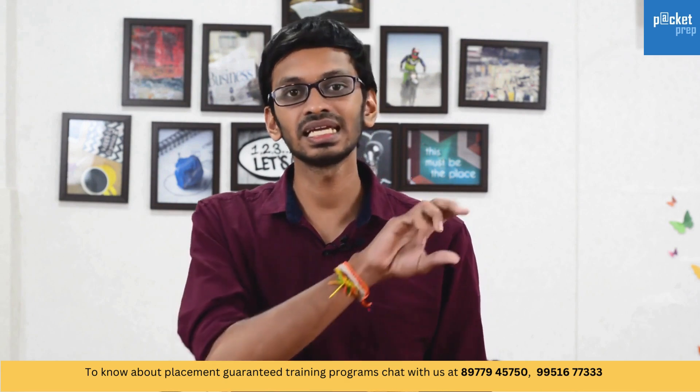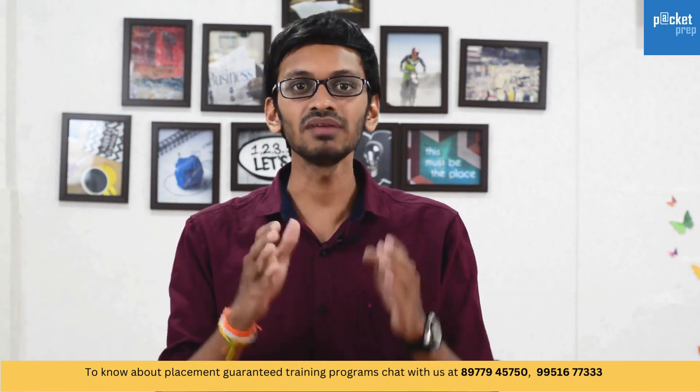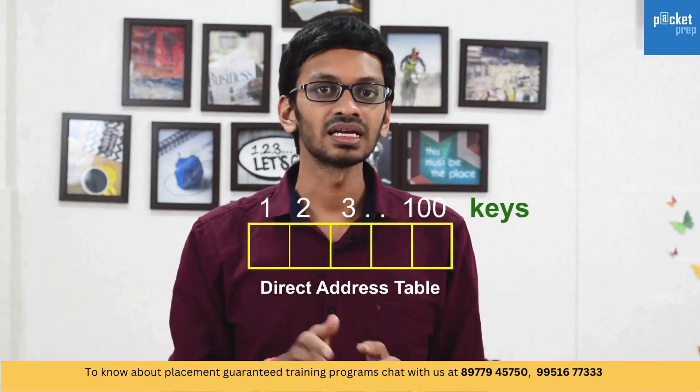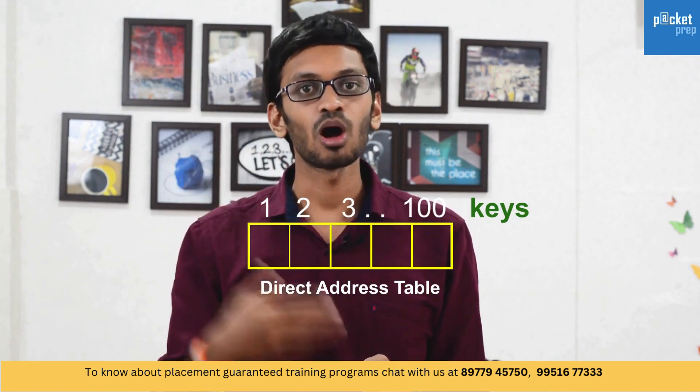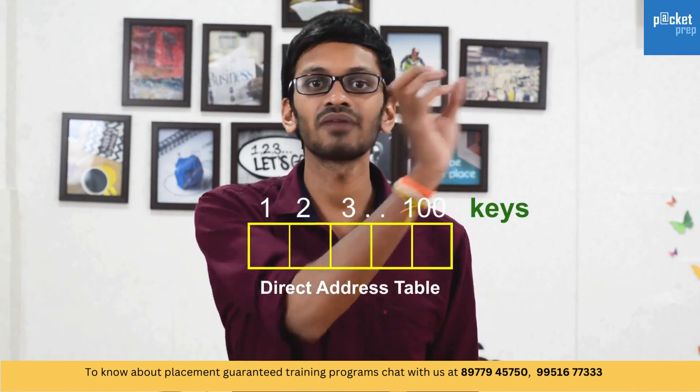They made this possible with the help of designing direct address table initially. Suppose if you are dealing only with the values 1 to 100, they have declared an array 1 to 100 and whenever a number is encountered, they have stored that particular number. All the other numbers which are uninitialized, suppose for example, let's say they have given minus 1.